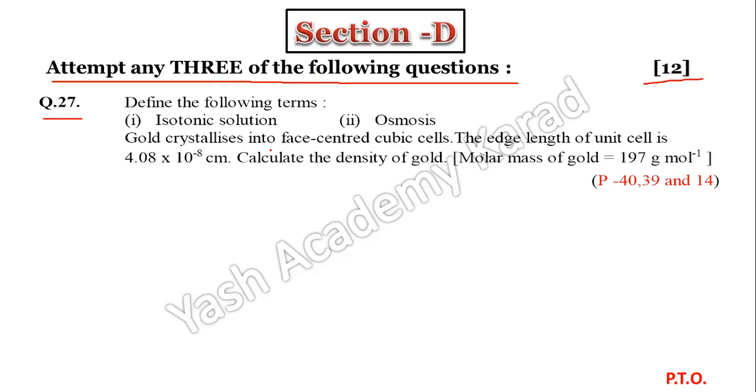You are given one numerical: Gold crystallizes into face-centered cubic cell. The edge length of the unit cell is 4.08 into 10 to the minus 8 centimeter. Calculate the density of gold. The molar mass of gold is supplied. Page number 40, 39, and 14.